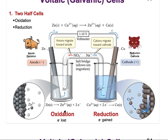At the side where the oxidation takes place, you have an electrode called the anode. On the other side, where the reduction takes place, that electrode is called the cathode — red cat.